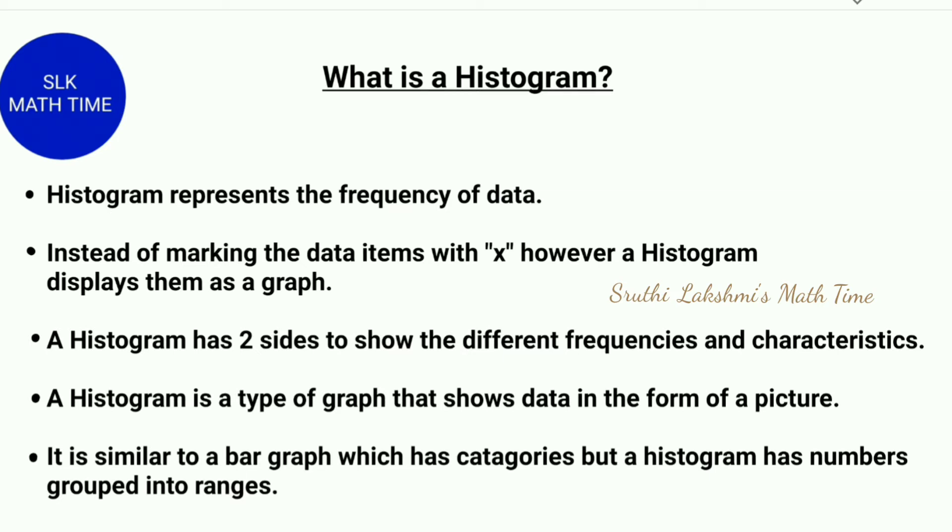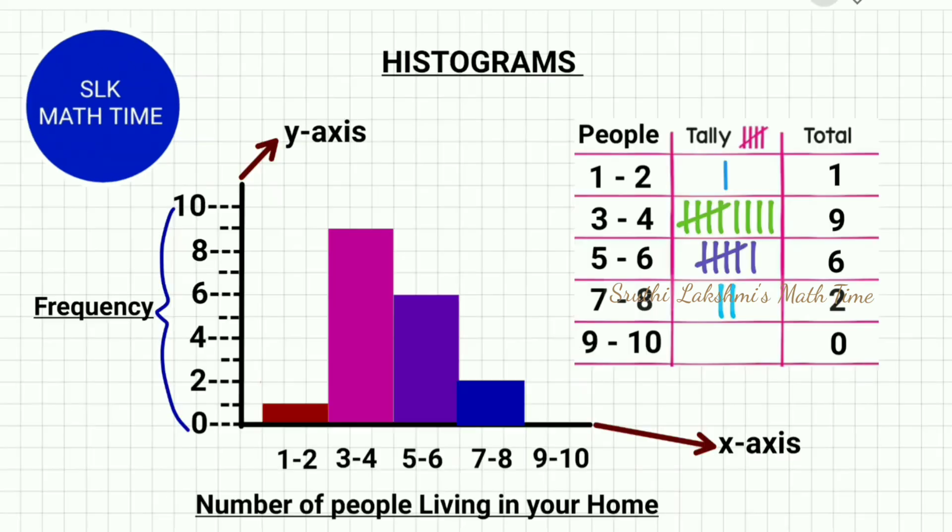So what is a histogram? A histogram represents the frequency of data just like a line plot. And instead of marking the data items with an X, a histogram displays them as a graph. So the graph they are talking about here is the bars.